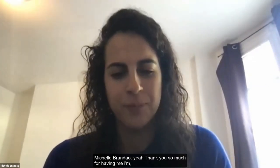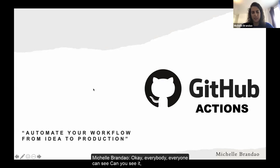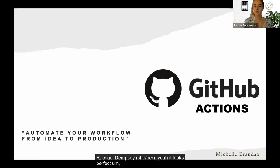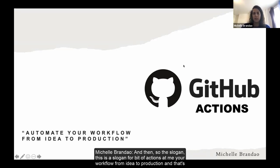Thank you so much for having me. So today I'm going to talk about GitHub Actions — it's something I started working on probably a month ago because of a side project. The slogan for GitHub Actions is 'automate your workflow from idea to production,' and that's pretty much what GitHub does: it automates your project.